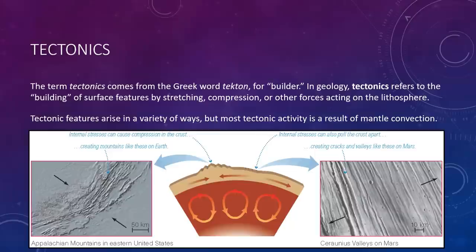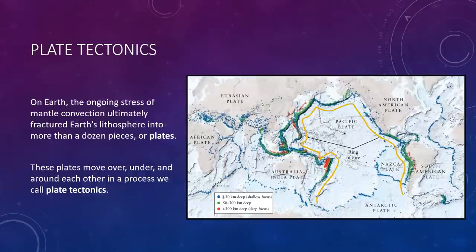The crust can be compressed in places where adjacent convection cells push rock together. You can see that right here on the left of this central image. This type of compression helps create the Appalachian Mountains of the eastern United States. Cracks and valleys, like you see on the right of this middle image, form in places where adjacent convection cells pull the crust apart. Examples of such cracks and valleys include the Guinevere Plains on Venus, the Ceraunius Valleys on Mars, and New Mexico's Rio Grande Valley.